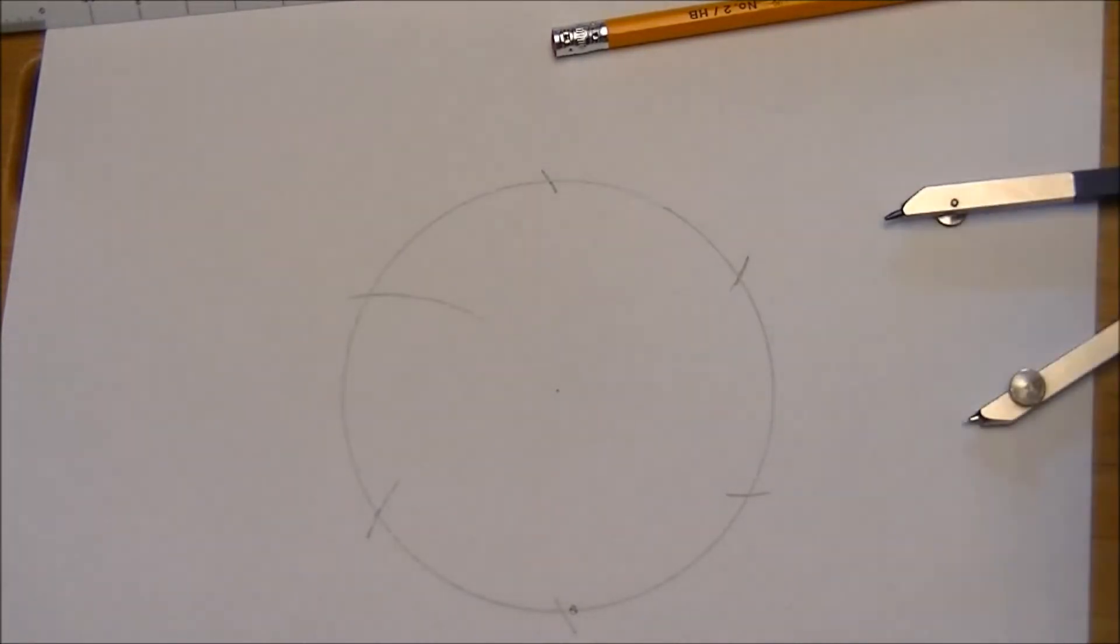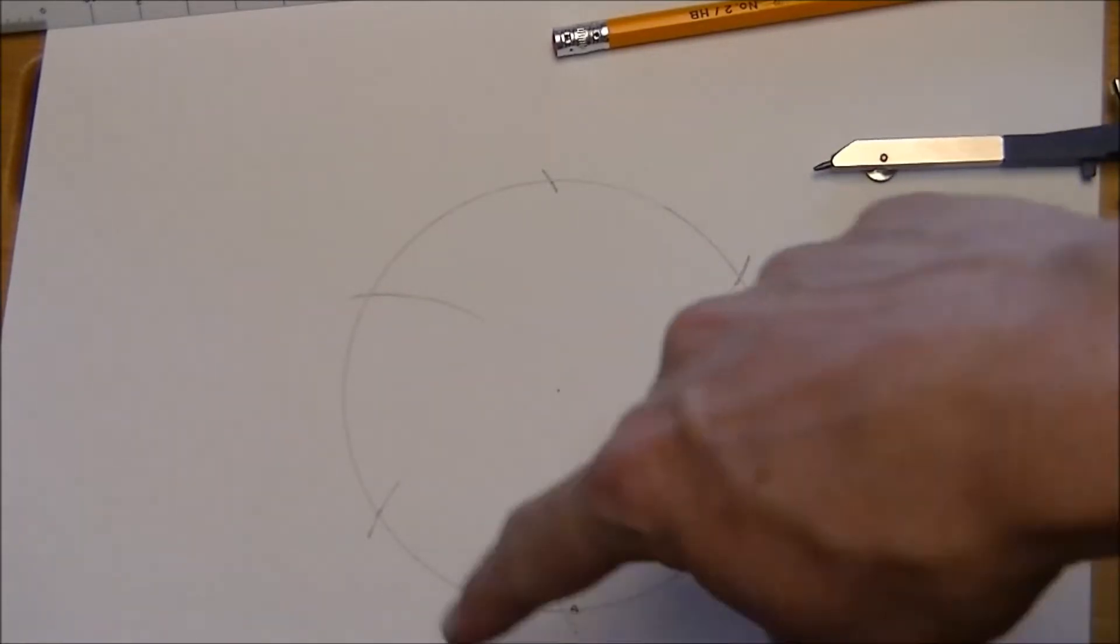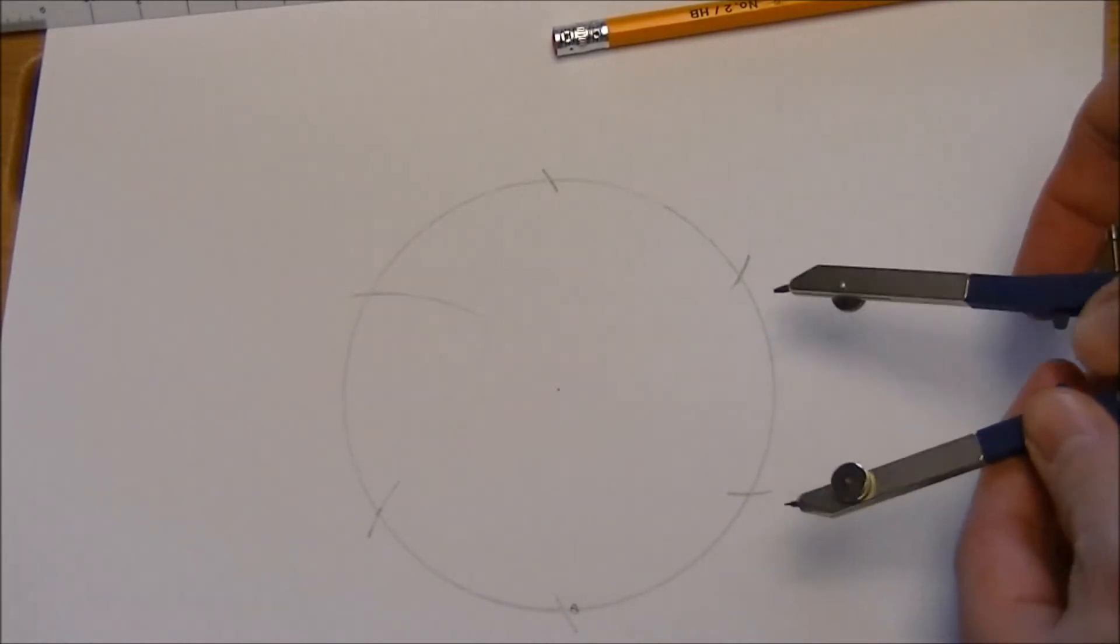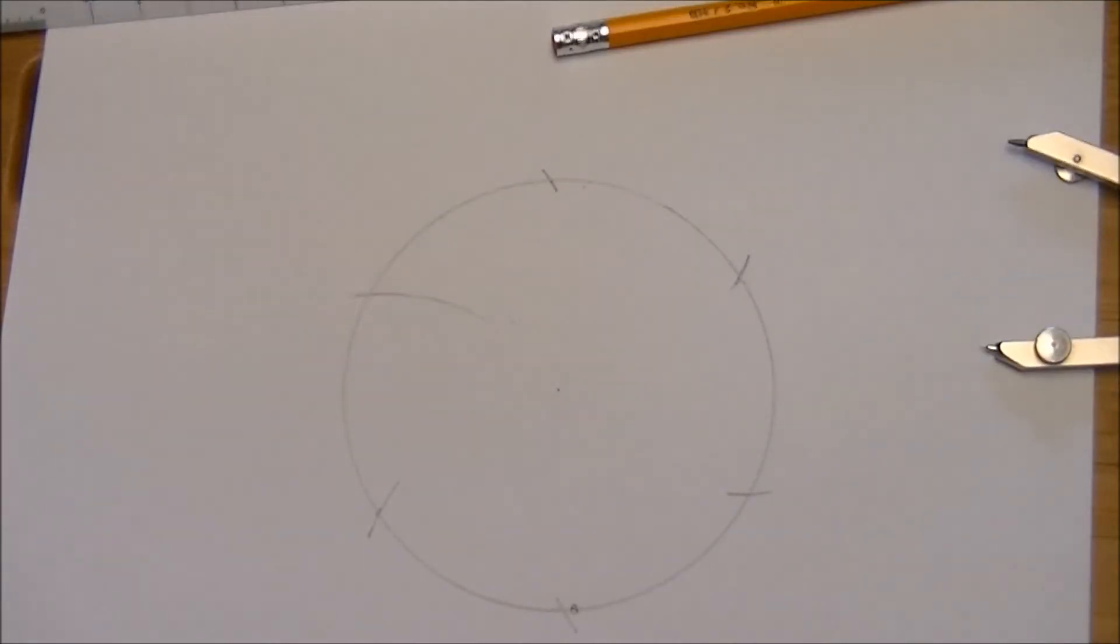it's off by a little because of the thickness of the pencil part there. But a good way to check is to set your compass at that radius afterwards and just go along and check just to make sure that they're all the same length.